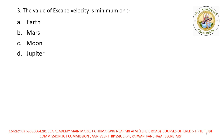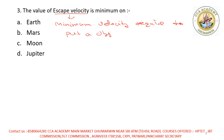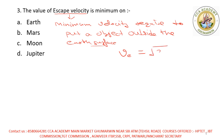Next question mein bola gaya hai: the value of escape velocity is minimum on? Pehle aapko pata hona chahiye ki escape velocity kya hoti hai — minimum velocity required to put an object outside the earth's surface. Mathematically, escape velocity v = √(2gR).